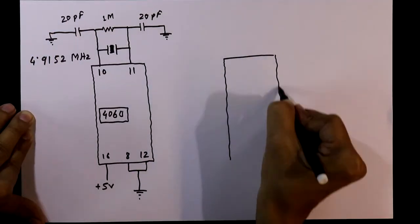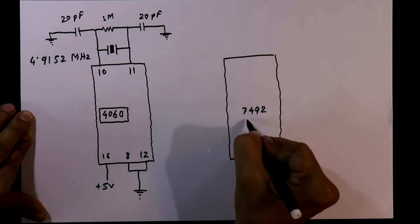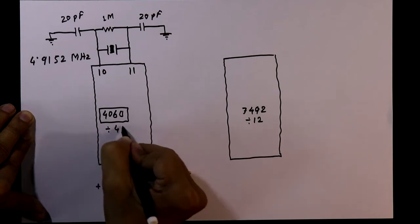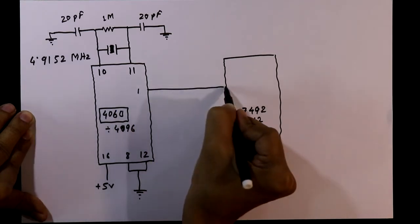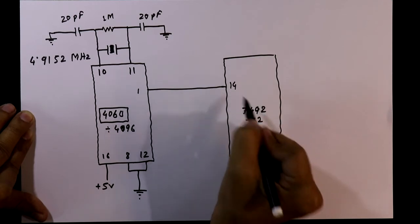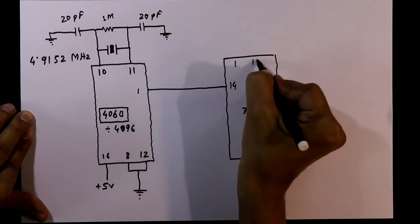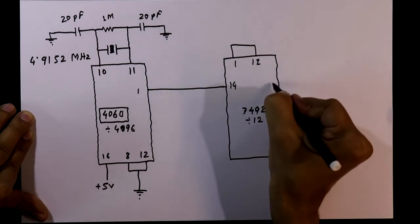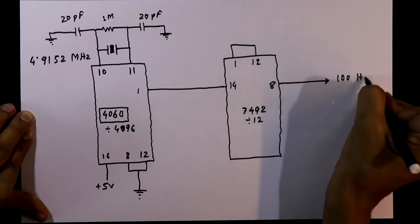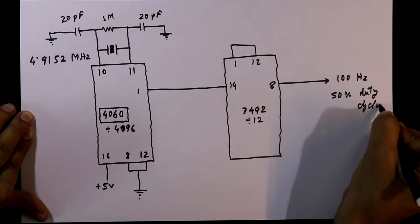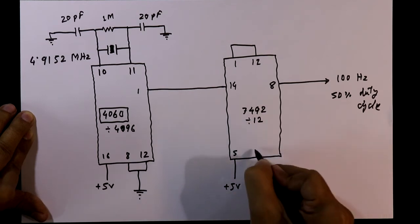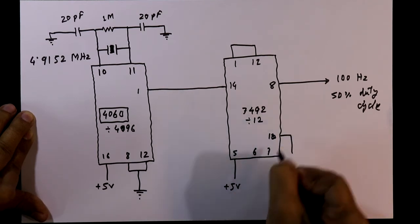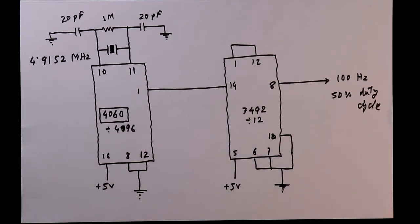IC 7492, which divides by 12, has its pin number 14 — the clock pin — connected to pin number 1 of IC 4060, which divides by 4096. Pin numbers 1 and 12 of IC 7492 are connected together, and from here we get 100 hertz with 50 percent duty cycle. Pin number 5 is connected to plus 5 volt, and pin numbers 6, 7, and 10 are connected to ground.